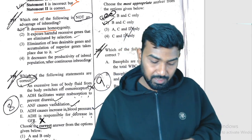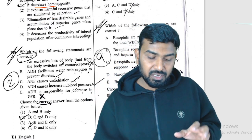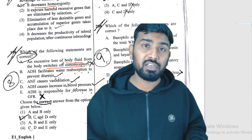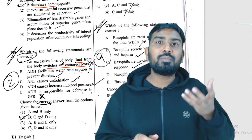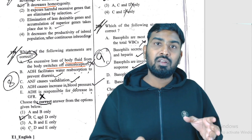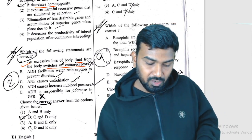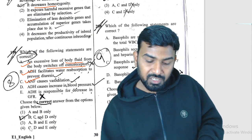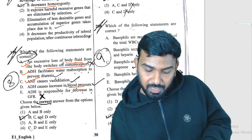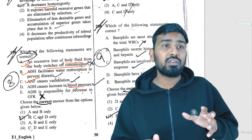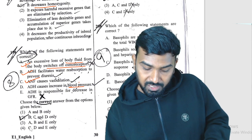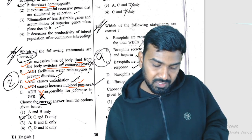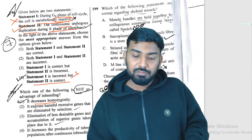Question 198: correct statements about kidney function regulation. Excessive loss of body fluid activates osmoreceptors — but the option says 'switches off' osmoreceptors, which is wrong. ADH facilitates water reabsorption to prevent diuresis — correct. ANF is a vasodilator — correct. ADH increases blood pressure (it is a vasoconstrictor) — correct. ADH does not decrease GFR; it increases it. So correct statements are B, C, and D.